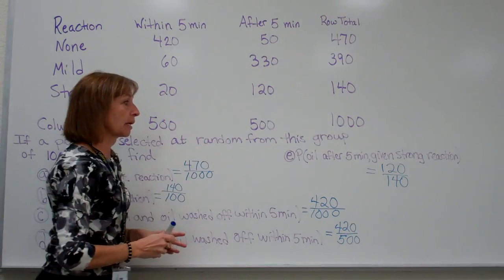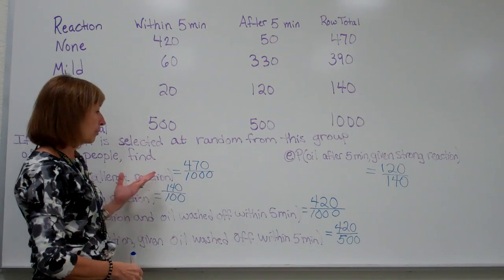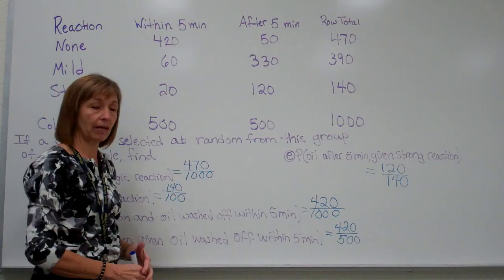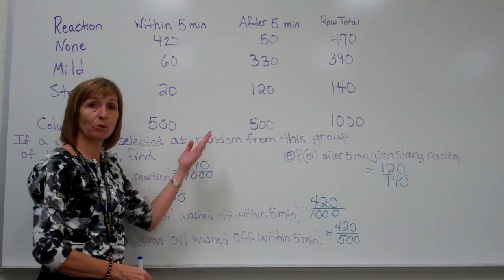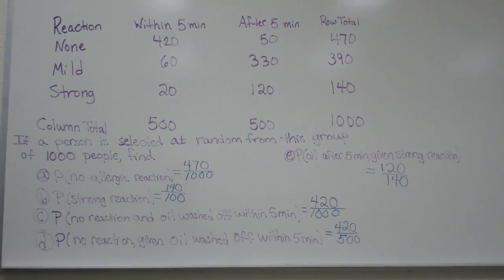And these are just some examples of how you would find your probabilities with just straight probabilities, with conditional probabilities, with compound probabilities, if the information is given to you in a table form.